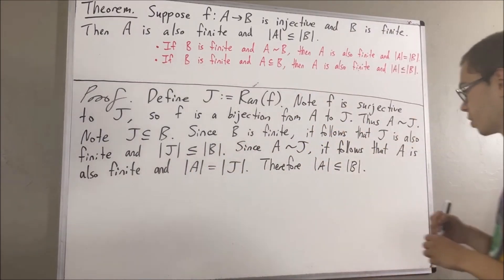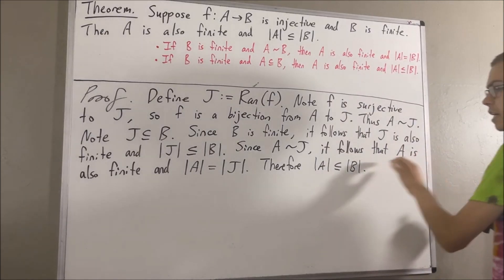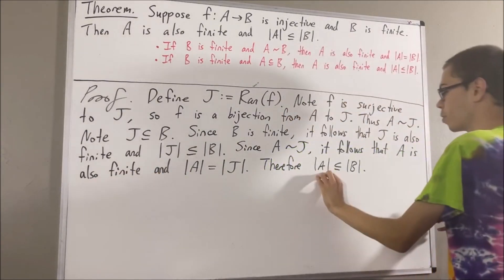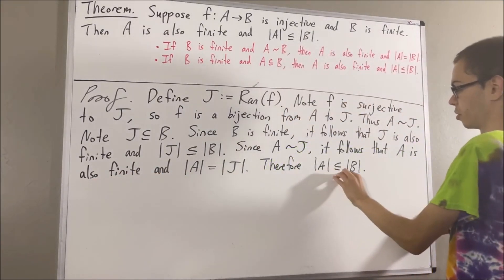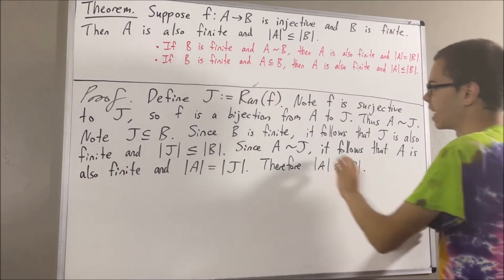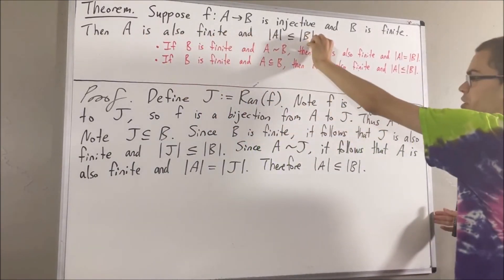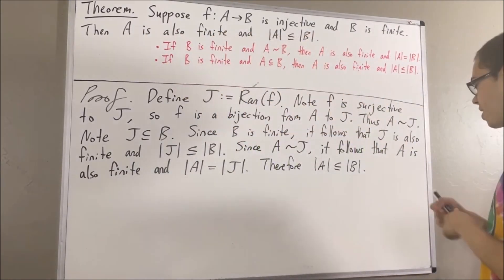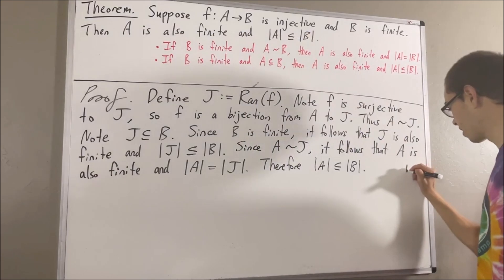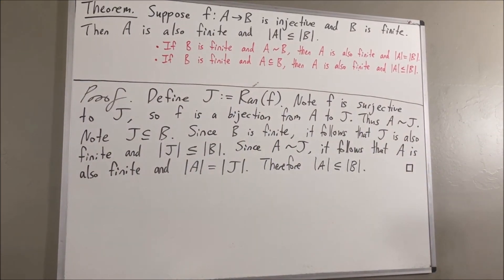So at this point we have shown that A is finite and the number of elements in A is less than or equal to the number of elements in B, and that is exactly what we wanted to prove. This completes the proof, and that's pretty much it for this video.